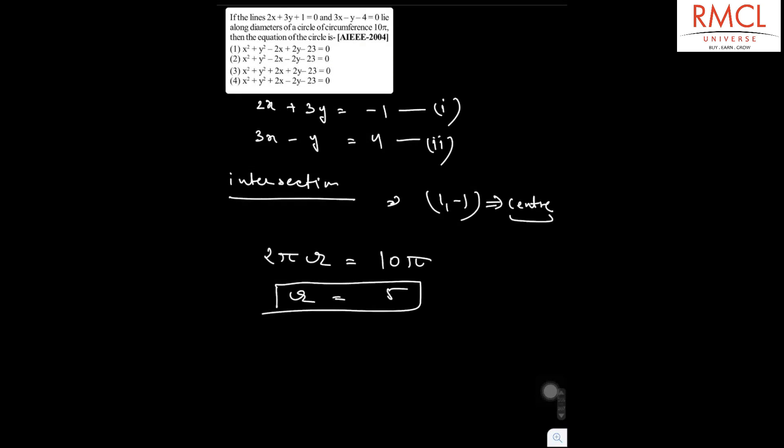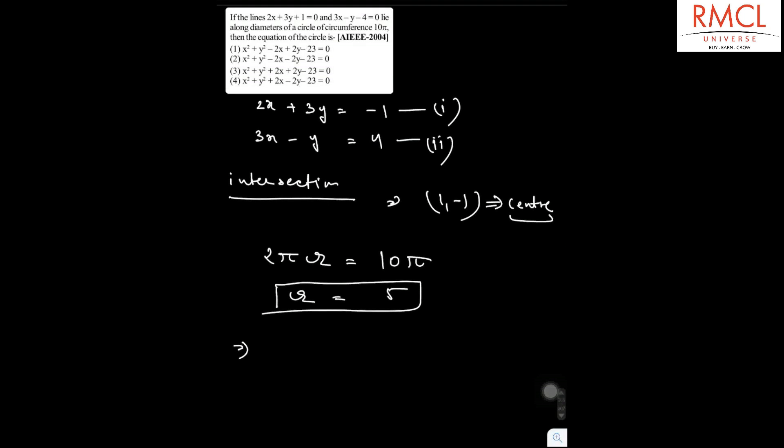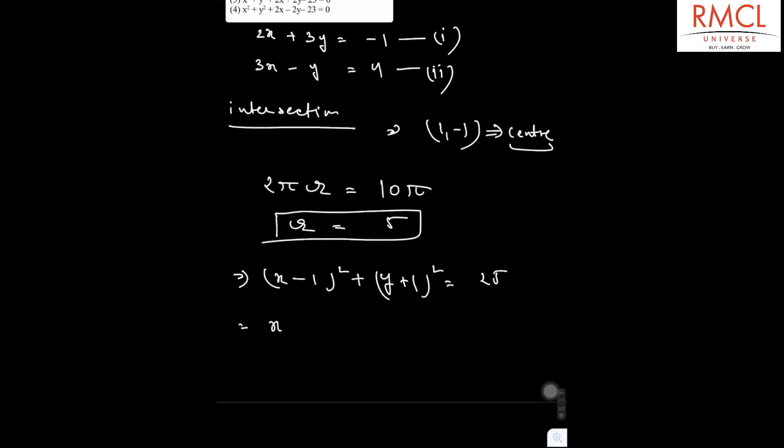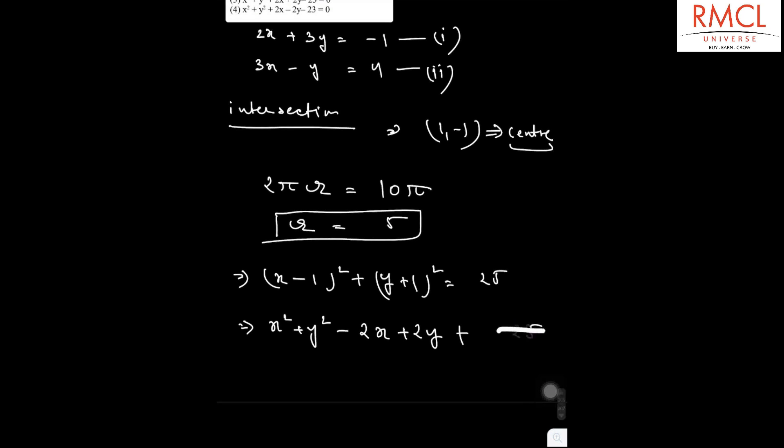Now we can find out the equation of the circle. That is (x - 1)² plus (y + 1)² equals 25. So this is x² plus y² minus 2x plus 2y plus 2 minus 25, which gives us minus 23.